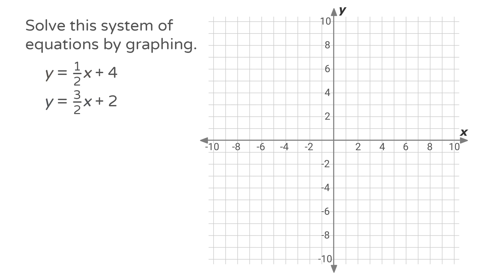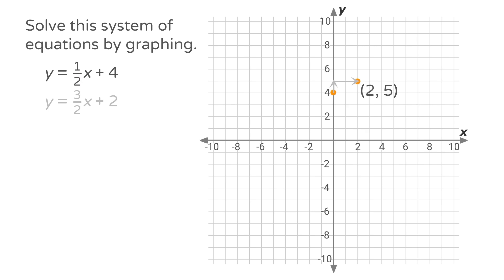Let's try a few examples. Solve this system of equations by graphing: y equals 1/2 x plus 4, and y equals 3/2 x plus 2. The first equation is y equals 1/2 x plus 4. The y-intercept is 4, so let's plot the point (0, 4). The slope is 1/2, so move up 1 and to the right 2 to find another point on the line. Draw a line connecting them, and we have our first line.